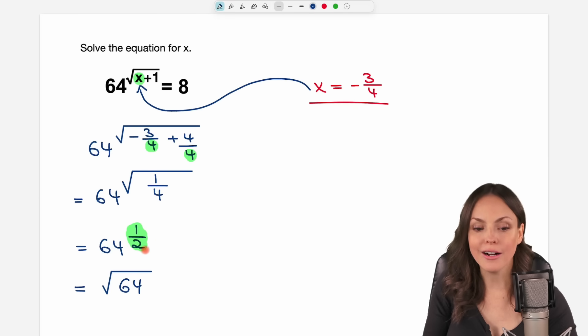Instead of a power of 1 over 2, you can always rewrite it as the square root. If you know that, then we have the square root of 64, which is just equal to 8, and that was the result we were looking for. Our result is valid. This is our only solution to this equation.